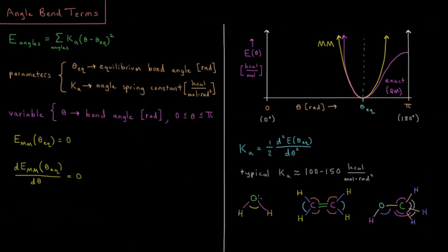Just as with bonds, if we have some XYZ or PDB file which defines the coordinates of the atoms in our system, there is also going to need to be some way to specify to our program what our bond angles are in the system. It might determine these automatically, as is frequently done for PDB files, or you might need to specify to the system what the bond angles are.